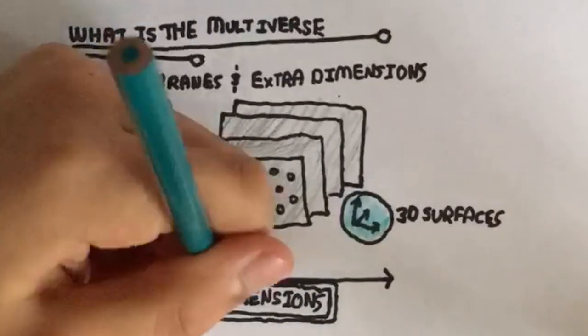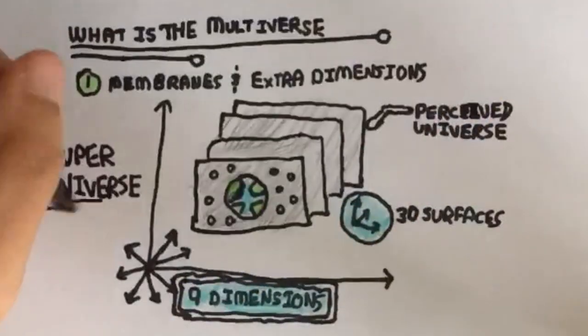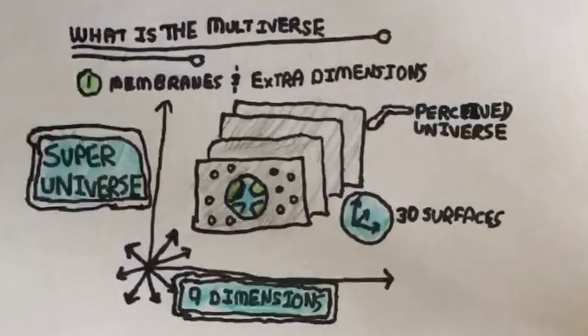This would mean, furthermore, that there are countless other membranes, which are perceived as universes to those who live inside them, but are actually a component of the true superuniverse.